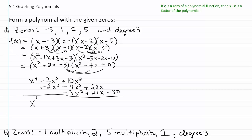Drawing a line and combining like terms: we have x to the fourth, then negative seven x cubed plus two x cubed gives negative five x cubed, then ten x squared minus fourteen x squared minus three x squared gives negative seven x squared, and then twenty x plus twenty-one x gives plus forty-one x, minus thirty. So it's quite a long polynomial, but that is our polynomial function with degree four and those zeros. It's not the only function that meets the requirement — I could multiply the entire function by any constant and it'd still have the same zeros and still be degree four — but this is one function that will work.